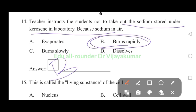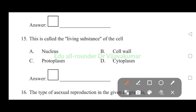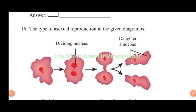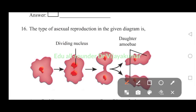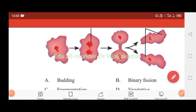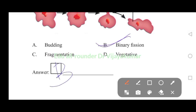The living substance of the cell is protoplasm. Answer C is the correct answer. The type of asexual reproduction in given diagram - it is binary fission. Answer B is the correct answer.